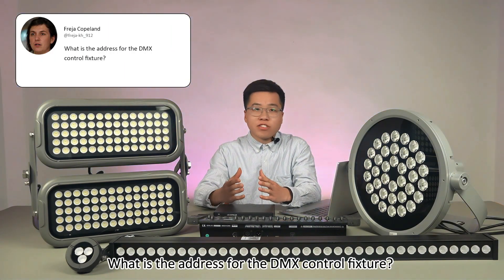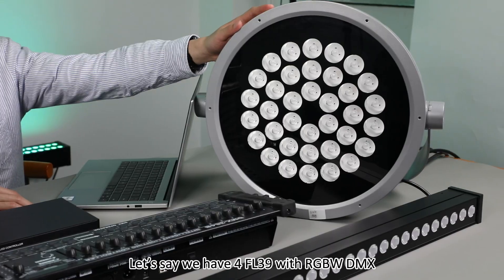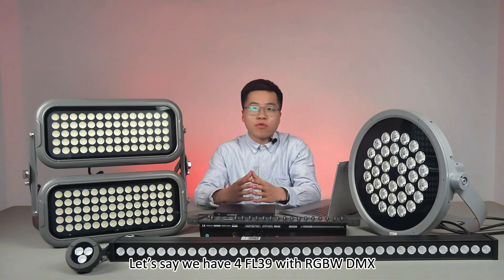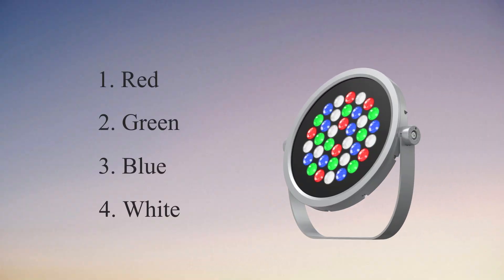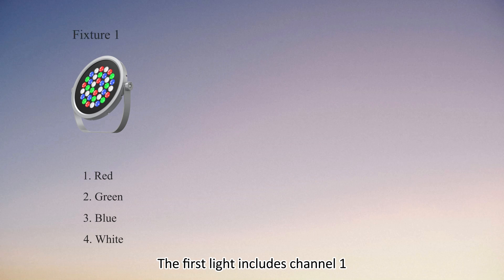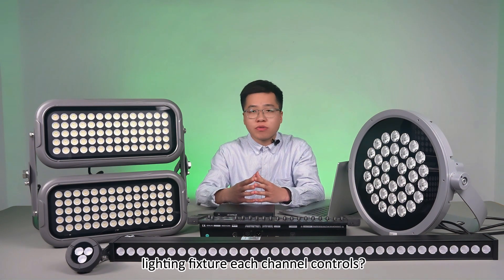The next question is from Frasier Koblen: What is the address for the DMX control fixture? Let's say we have four FL39 fixtures with RGBW DMX, each having four channels for red, green, blue, and white. The first fixture uses channels 1 through 4, and the second fixture uses channels 5 to 8. With many channels, how can we know exactly which lighting fixture each channel controls?